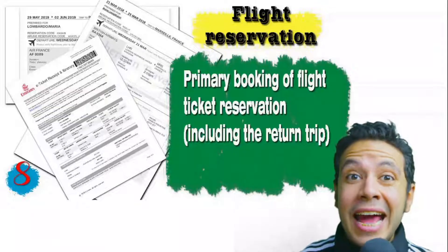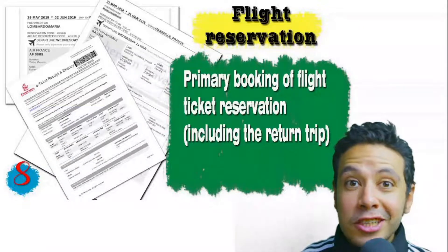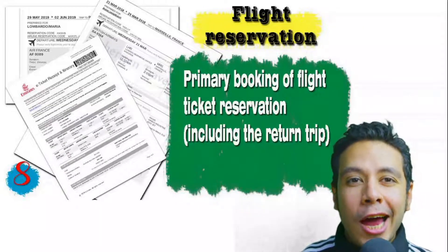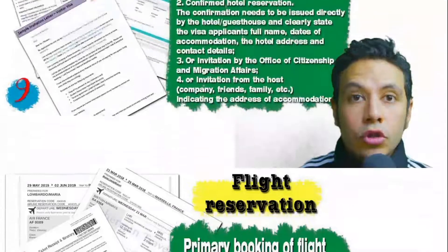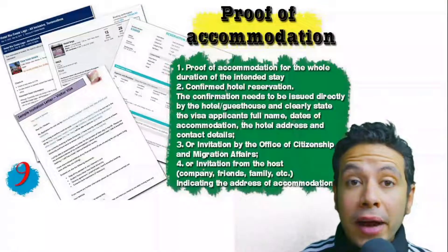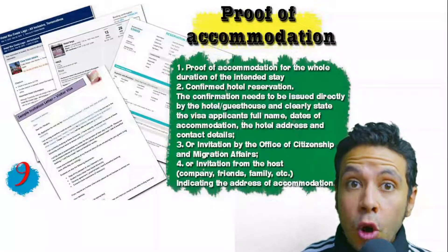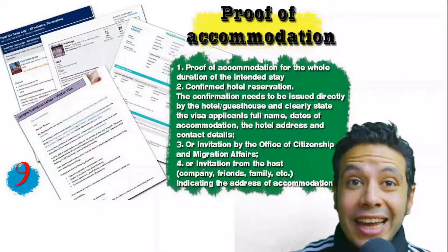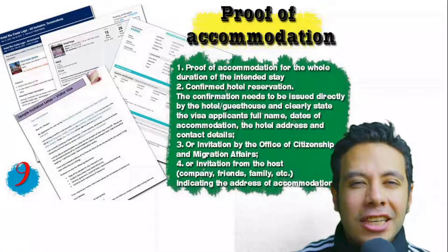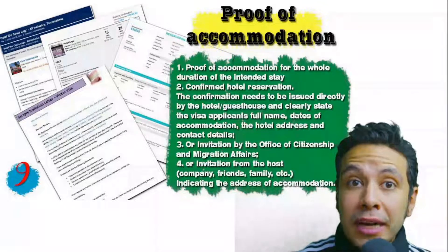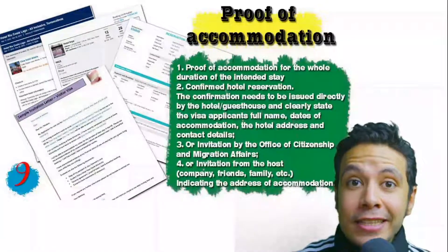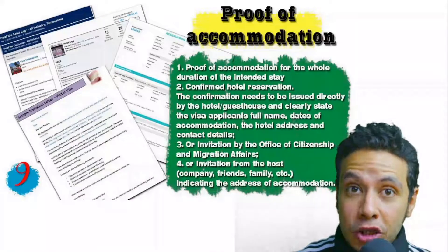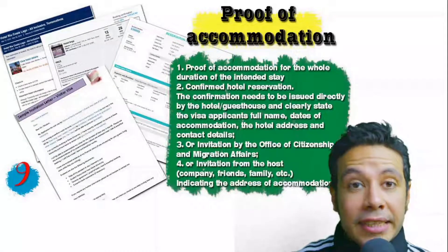The flight reservation must include a return ticket. You will also need to provide proof of accommodation — a confirmed hotel reservation, an invitation from a host, or an invitation from an organization you are visiting. For a hotel or hostel, an initial booking is acceptable, but in some minor cases a confirmed booking may be required. The hotel name, address, and contact number must all be mentioned.